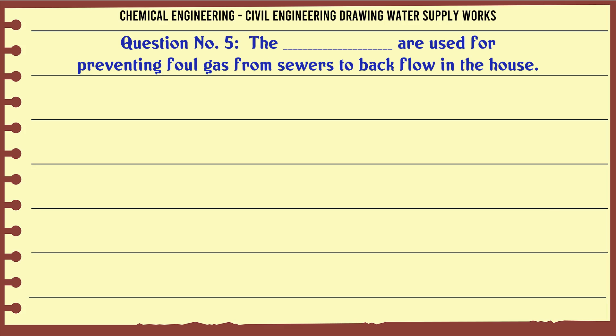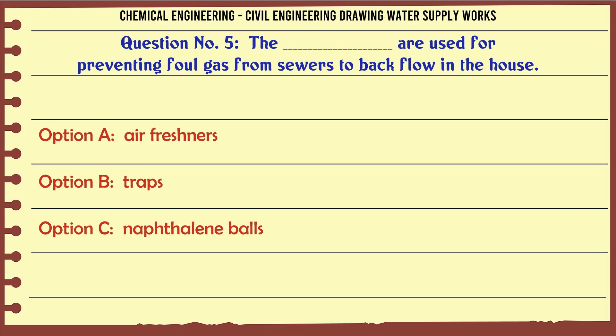What are used for preventing foul gas from sewers to backflow into the house? A. Air fresheners, B. Traps, C. Naphthalene balls, D. Phenyl. The correct answer is Traps.